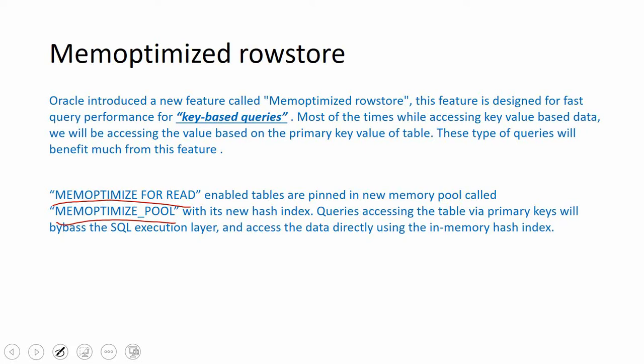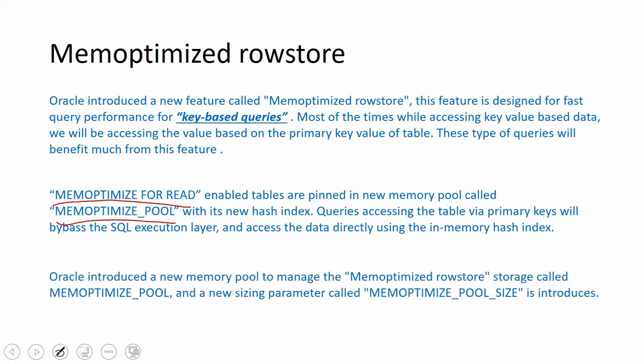Using only the key value, Oracle will directly take the information from this pool and bypass the SQL execution layer, directly taking the data from the data layer. To manage this pool, Oracle introduced a parameter called memoptimized_pool_size, and also a new package called dbms_memoptimized. Using both of these we can manage this pool. By default this is disabled and we need to enable it by setting a value for this parameter.